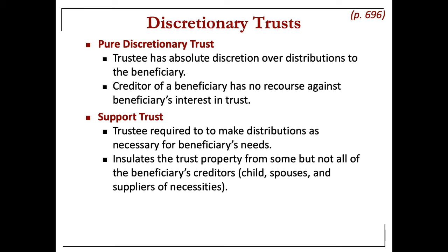Support trusts do insulate trust property from some but not all creditors under the common law. What courts have generally found is that because the requirement for distributions is for needs — things that are necessary — then creditors that provide for those needs, called suppliers of necessities, may be able to reach it.